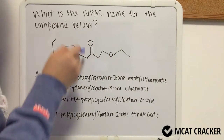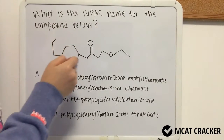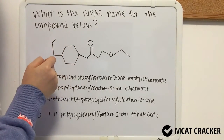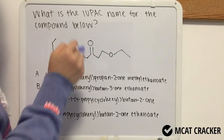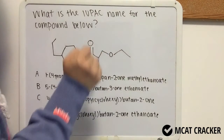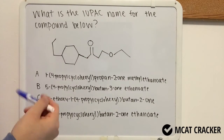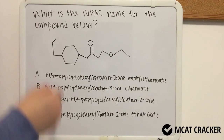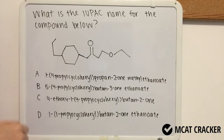Over here we have a cyclic alkane hydrocarbon group. Knowing that we have these three groups, we want to determine which one would have priority in naming. You should also know the precedence of naming compounds.